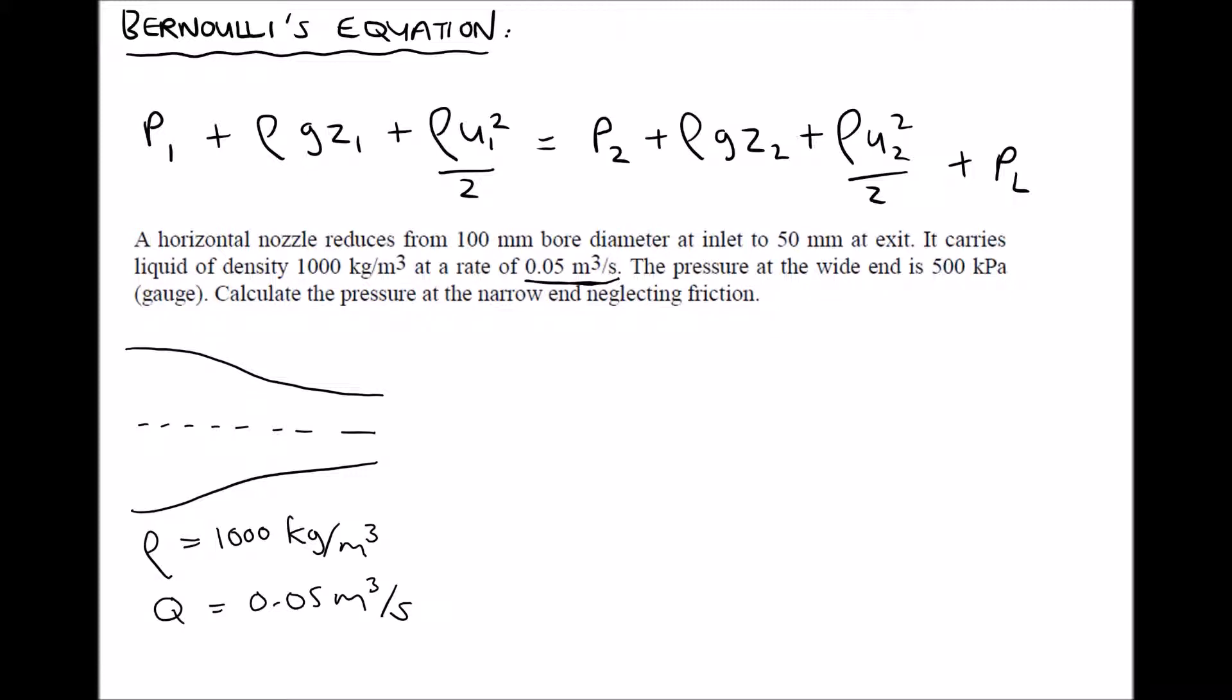Now it's important to note that the volume flow rate at position 1, so at the left of our duct, equals the volume flow rate at position 2. Because whatever volume of fluid passes position 1 every second must pass position 2 every second. There's nowhere for fluid to be gained or lost between those two positions.